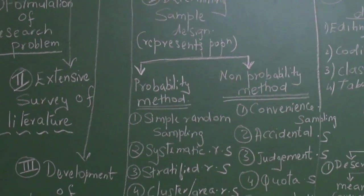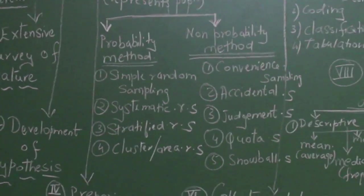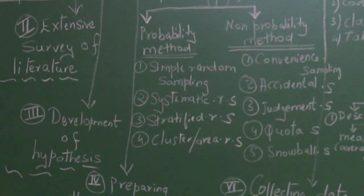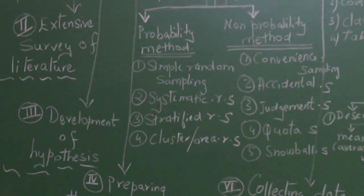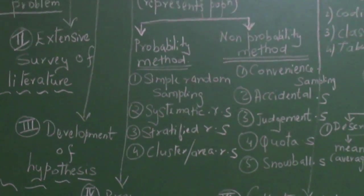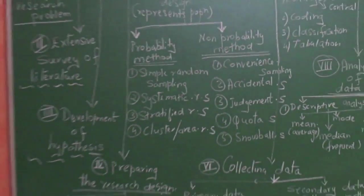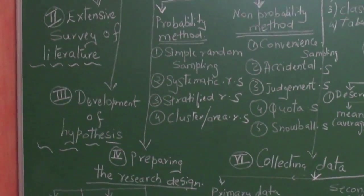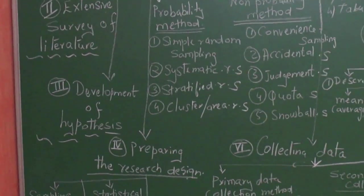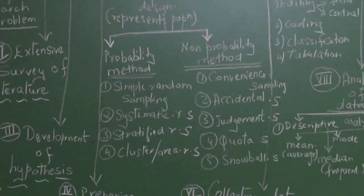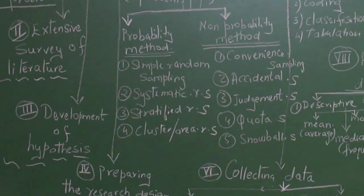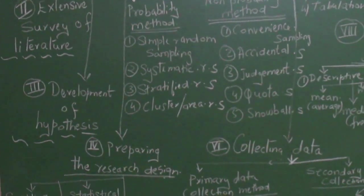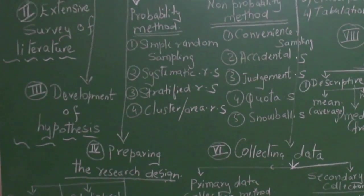Now there are two ways of doing it: methods of collecting samples. It is probability method or the random method. The probability method is a very good method where everybody feels that they have a chance in being a sample, getting through and being a sample in that experiment.